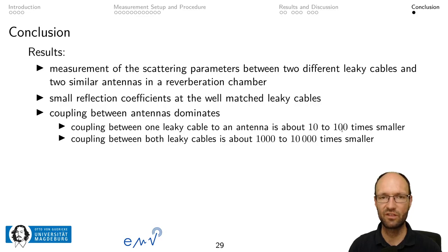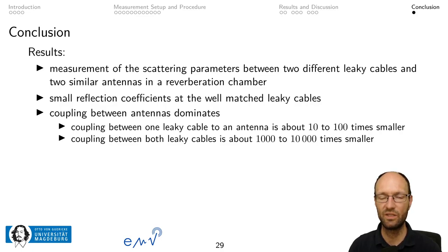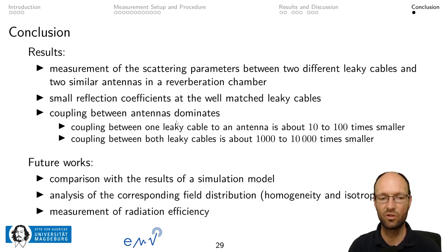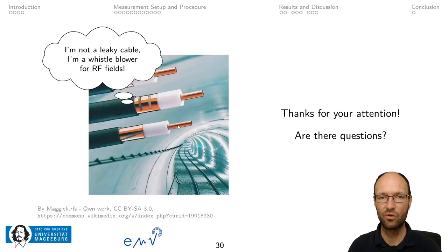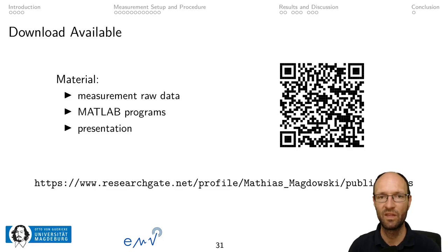To summarize: we measured the scattering between leaky cables in a reverberation chamber. We measured quite small reflection coefficients at the well-matched leaky cables. For coupling, the antenna-to-antenna coupling dominates; antenna-to-leaky-cable coupling is about 10 to 100 times smaller; and coupling between leaky cables is about 1,000 to 10,000 times smaller than between antennas. Future work includes comparison with simulation models, analysis of field distribution inside the chamber or aircraft, and measurement of radiation efficiency. Thanks for watching — please feel free to email questions or comment, and we will publish the raw data, MATLAB files, and presentation on my ResearchGate account.